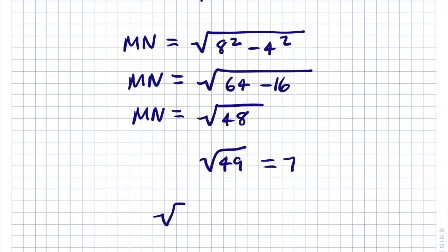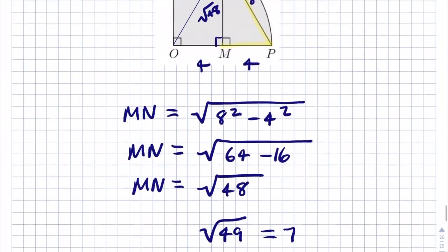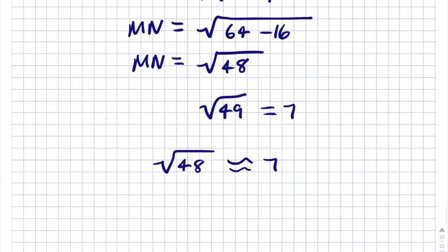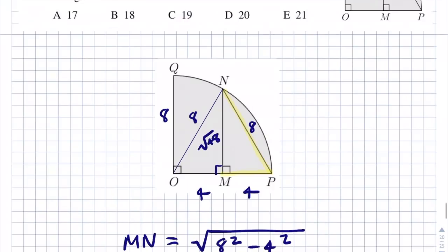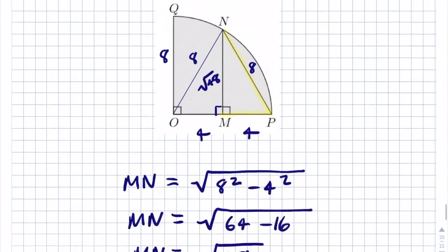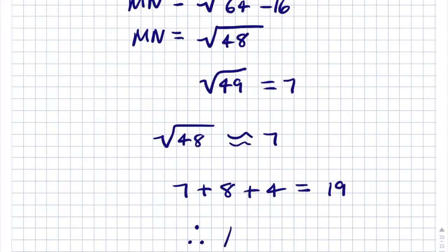The total perimeter is approximately 7 + 8 + 4 = 19. That gives us answer C. The final answer is C.